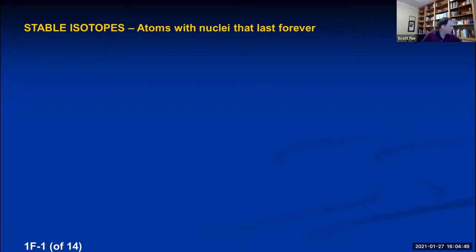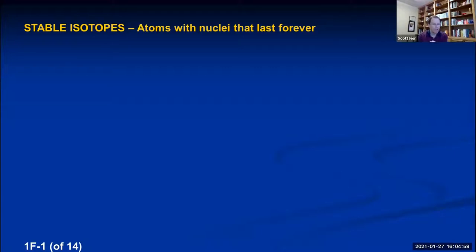Continuing on with the topic of isotopes from Mr. Leozeni: every single element on the periodic table consists of atoms. Each element has a certain number of protons — whatever number of protons you have, that's what element you are. If you have four protons, you're a beryllium atom. But you can vary the number of neutrons, and when you vary the number of neutrons, you have isotopes.